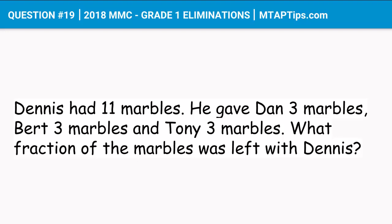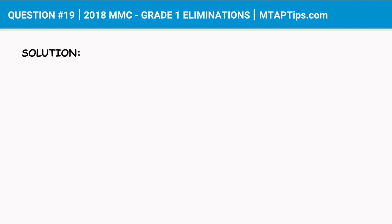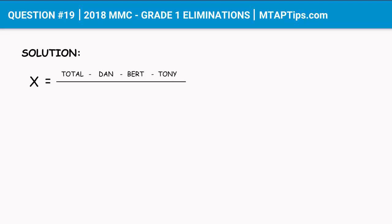try to solve this problem. Let's make X to be the unknown number. So X is equal to the total number of marbles that Dennis had, minus the number of marbles he gave to Dan, minus the number of marbles he gave to Bert, and minus the number of marbles he gave to Tony, then over the total number of